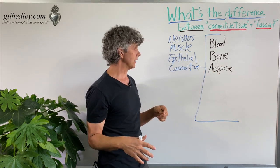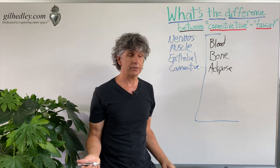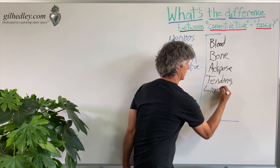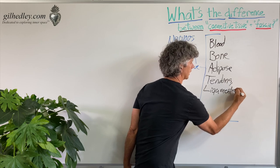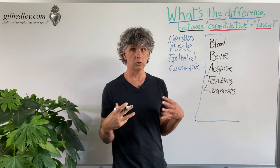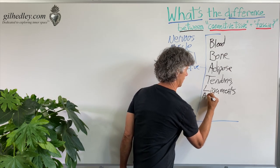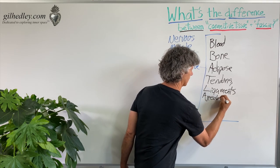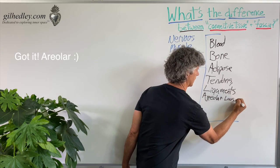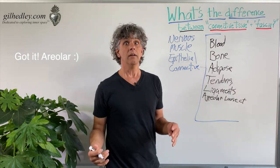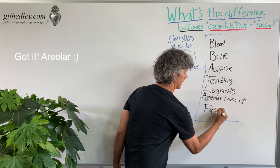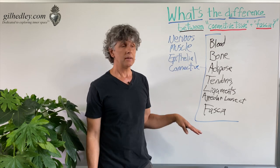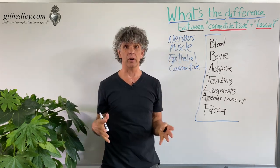Adipocytes are connective tissue cells. What else? Tendons, ligaments — those are all connective tissues. Areolar or loose connective tissues. And fascia. These are not in any particular order, but fascia is one of many elements of the category of connective tissue.